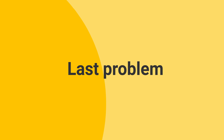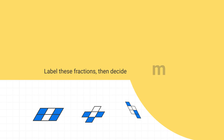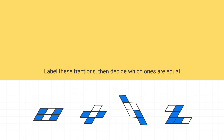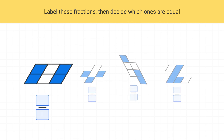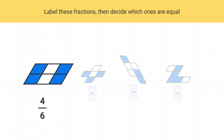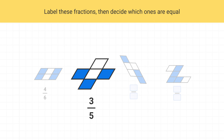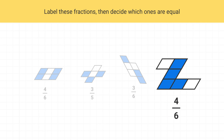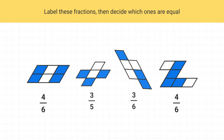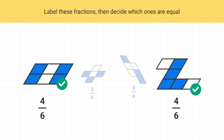Here's your last problem for this video. Label each of these fractions and decide which ones are equal. Just like before, we'll start by labeling each model. This is four-sixths, this is three-fifths, this is three-sixths, and this is four-sixths. Now we can see that these two are equal because both of them show the fraction four-sixths.